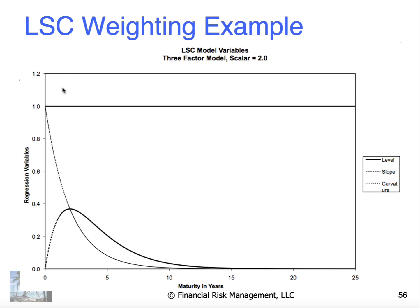And so the weighting, the level, applies the same weight across the entire curve. Slope applies the most weight on the short end of the curve. And curvature basically applies the weight somewhere in the middle. That the peak point in the middle is roughly related to the scalar, although not exact.